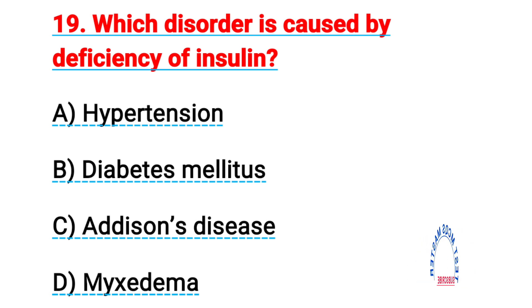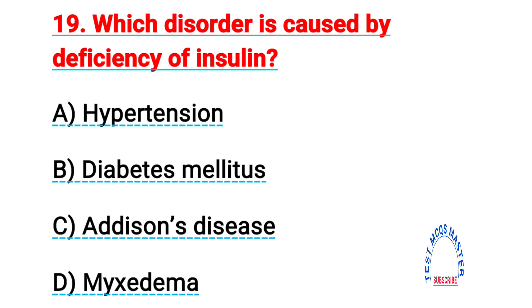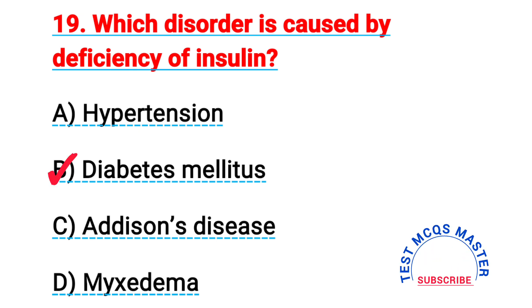Question number nineteen: which disorder is caused by deficiency of insulin? The right answer is B, diabetes mellitus.